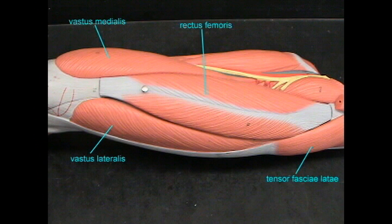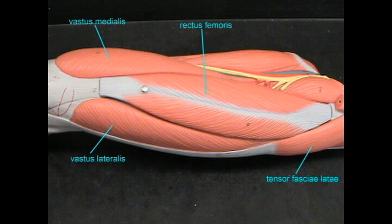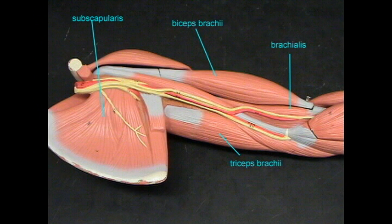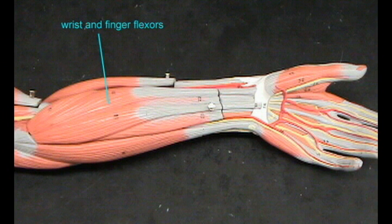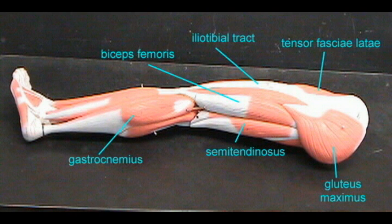Not all humans have the same muscles, or the same anatomy of the muscles. Muscles can vary in their size, shape, and attachment points. A specific muscle may be absent or exist in a duplicated form.